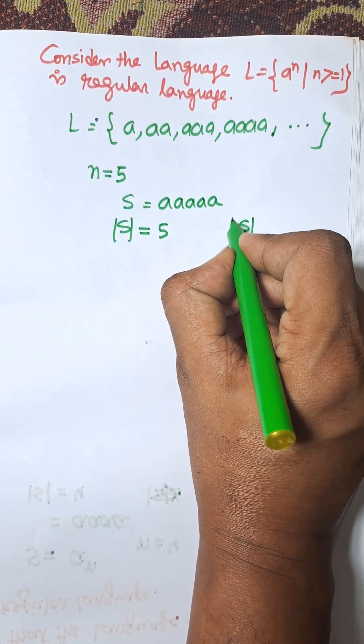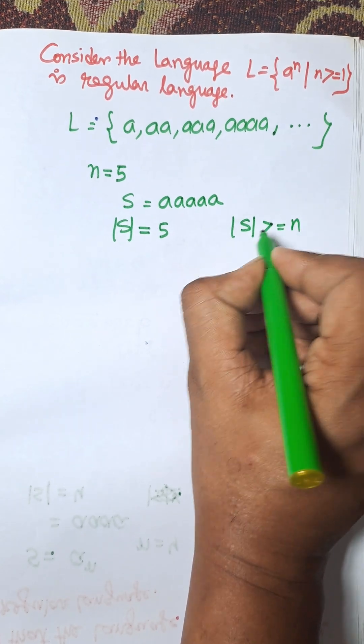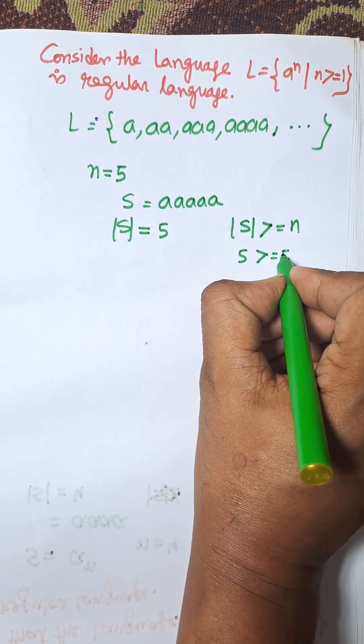And according to the rule, length of s is greater than or equal to n. Here, 5 is greater than or equal to 5. It's true.